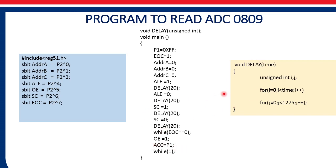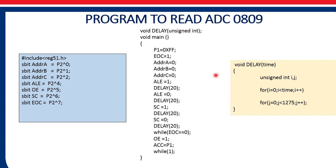For this we require a short delay. This is a delay subroutine which uses two for loops and gives a delay in milliseconds. Calling delay(20) passes the number 20 to the variable time, and the program will generate a delay of 20 milliseconds. This completes the C programming to read a value of ADC 0809 using 8051.